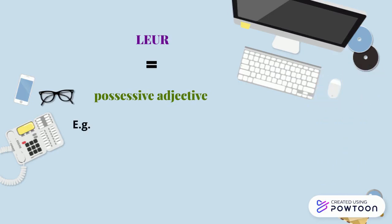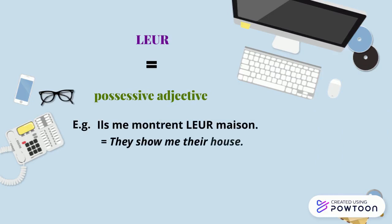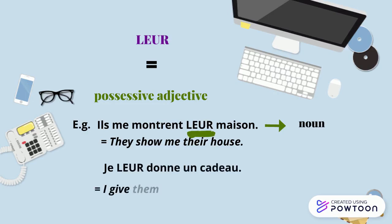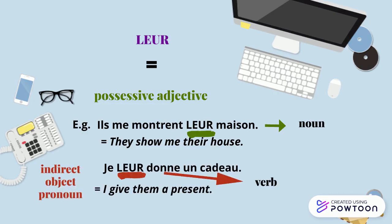For instance, 'Il me montre leur maison' — they show me their house — leur is a possessive adjective singular, followed by a noun. Whereas, 'je leur donne un cadeau' — I give them a present — leur is an indirect object pronoun, followed by a verb.